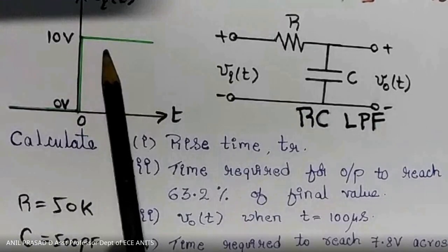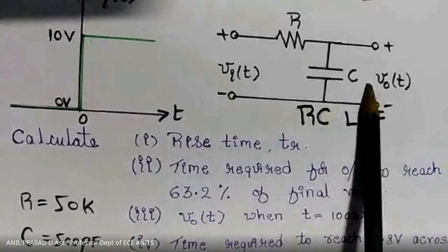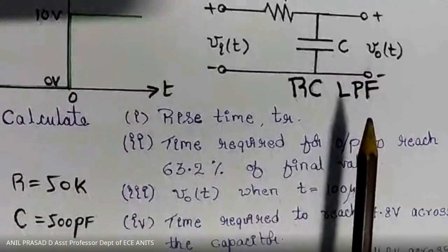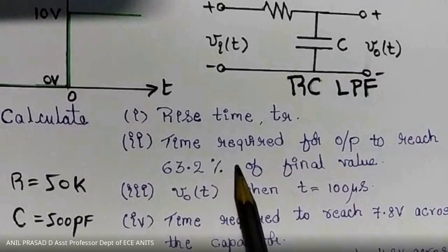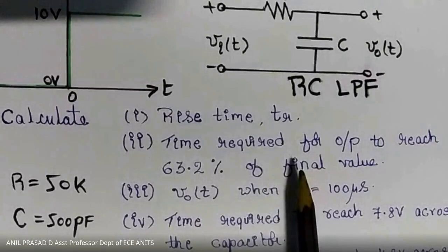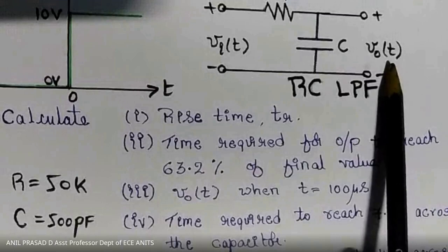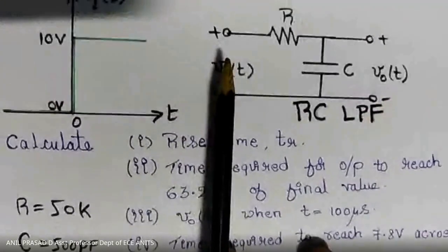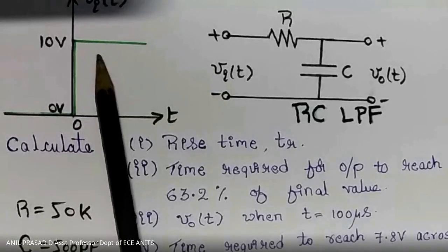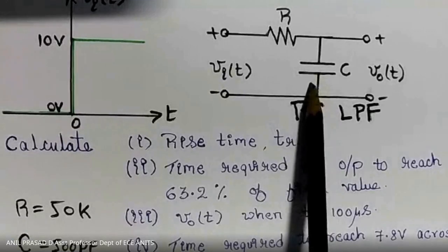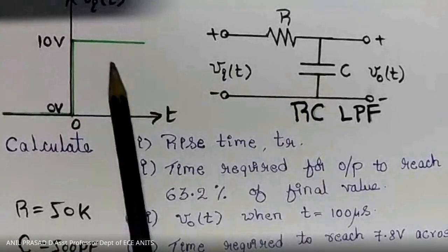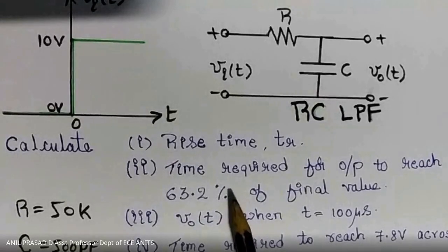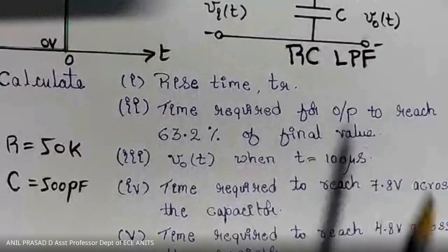The final value is 10 volts. Normally, a capacitor requires 5 tau seconds to reach 100 percent of the final value. Here we need to find how much time is required to reach only 6.32 volts — that is 63.2 percent of 10 volts.